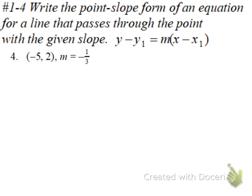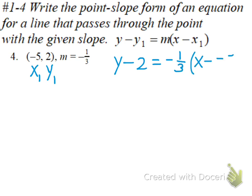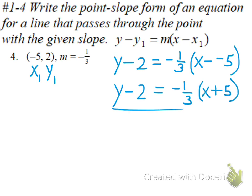Same directions on this one. Label your points, substitute in. Y minus y-sub-1, which is 2, equals our m, which is negative 1/3, times x minus from the formula — x-sub-1 is negative 5. Rewrite the minus negative as plus a positive, and we're done.